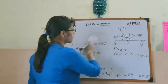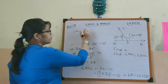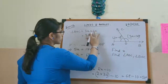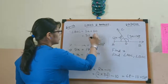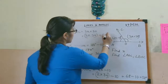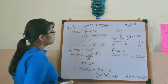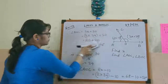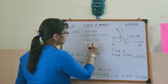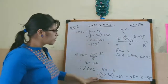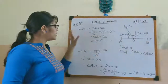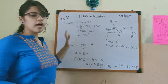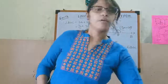Now we find angle BOC. Angle BOC equals 3x plus 20. Substituting x equals 34: 3 into 34 equals 102, and 102 plus 20 equals 122 degrees. So angle AOC is 58 degrees and angle BOC is 122 degrees. Rest of the sums up to sum number 6 will be your homework. Thank you.